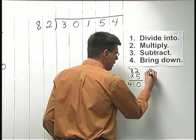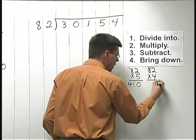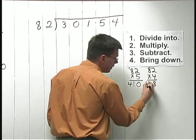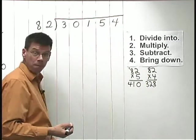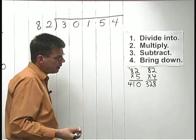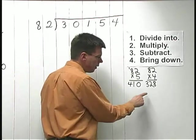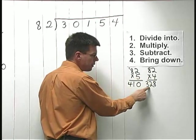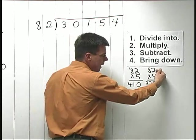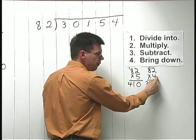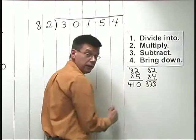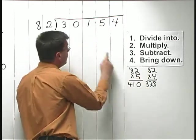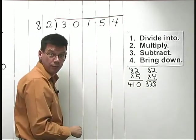What if I try 82 times 4? That will be smaller. 4 times 2 is 8. 4 times 8 is 32. So, I have 328. Still too big. In fact, it is kind of interesting to notice here that if we think of 4 times 8 as 32, 4 times 80 is going to be 320. So, 4 times 82 is going to be a little bit more than 320. So, just by observing that 4 times 80 is 320, we can see that this 82 times 4 is too big.